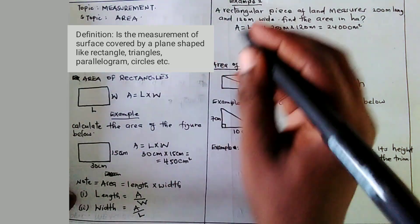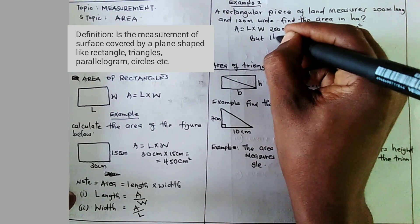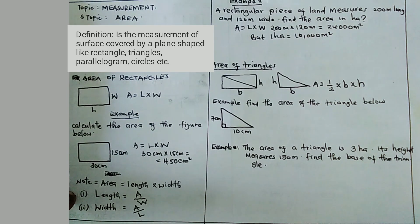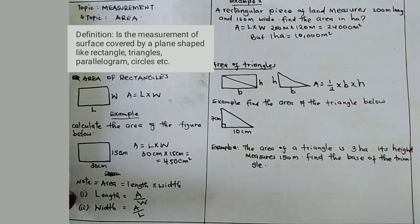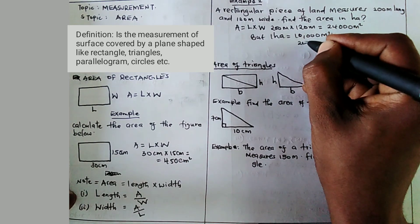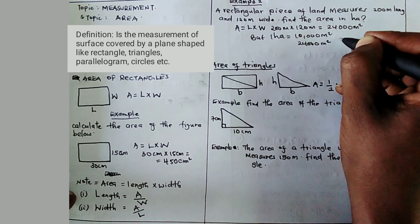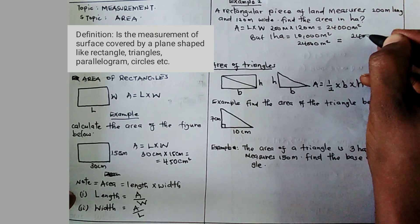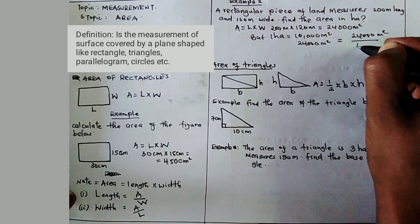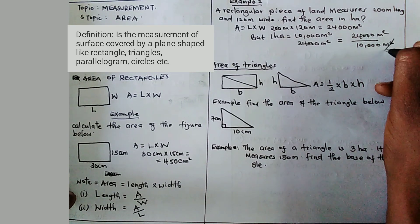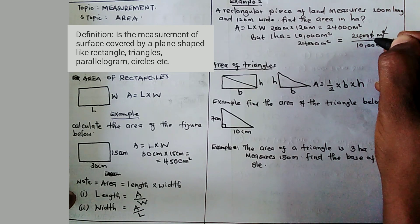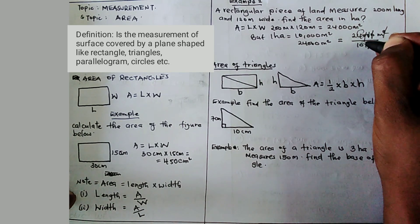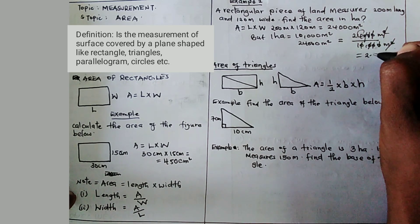But you are told to find the area in hectares. One hectare equals 10,000 meter square. If one hectare is equal to 10,000 meter square, how about 24,000 meter square? You divide: 24,000 meter square over 10,000 meter square. The meter squares cancel, zeros cancel, and you get 2.4 hectares.